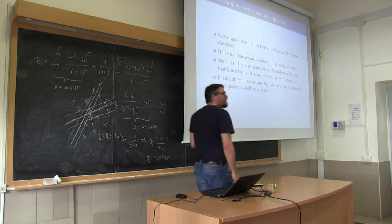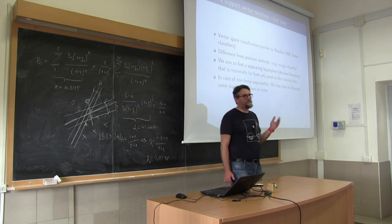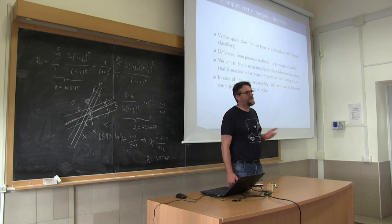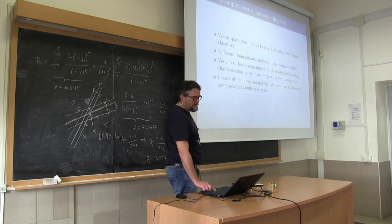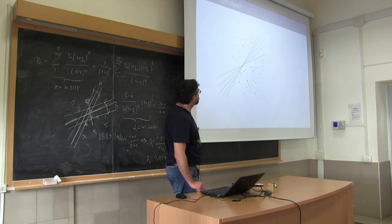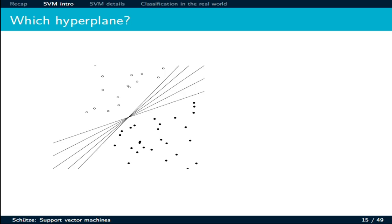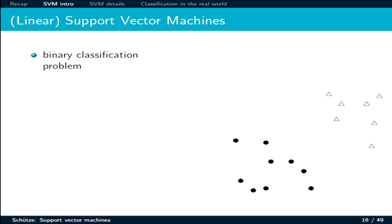That's fantastic if the two classes are separable. If they are not, we have to do some tricks to make it work — we have to discount some points as either outliers or noise. We are looking for the option that has the largest margin. Let's see this binary classification problem with circles and triangles.